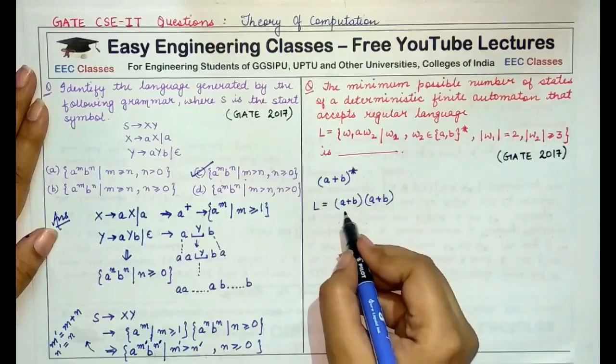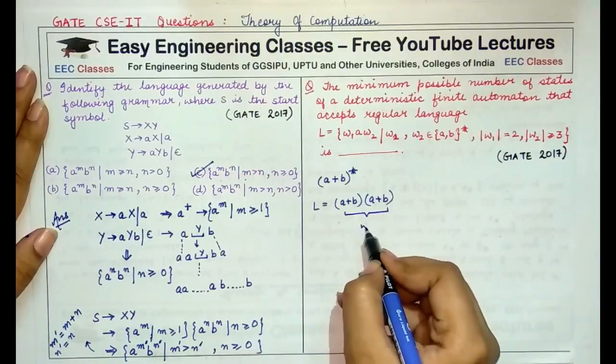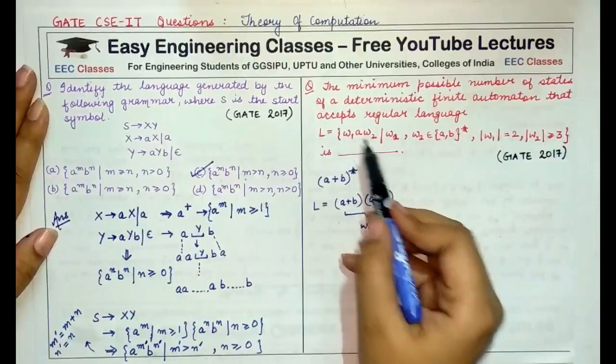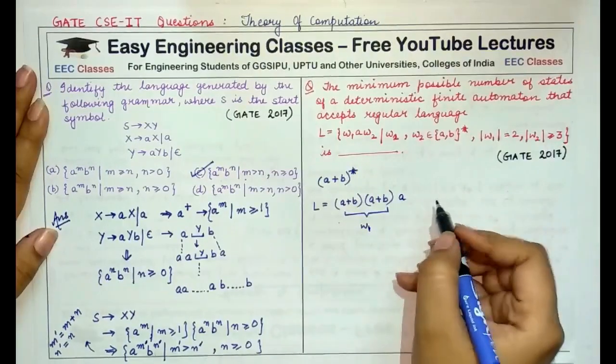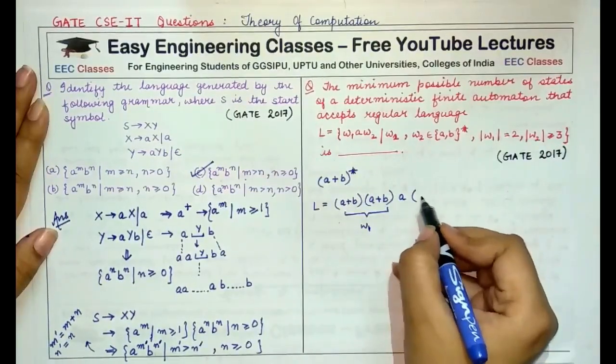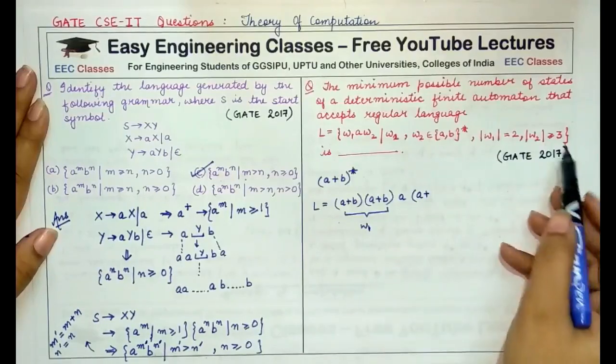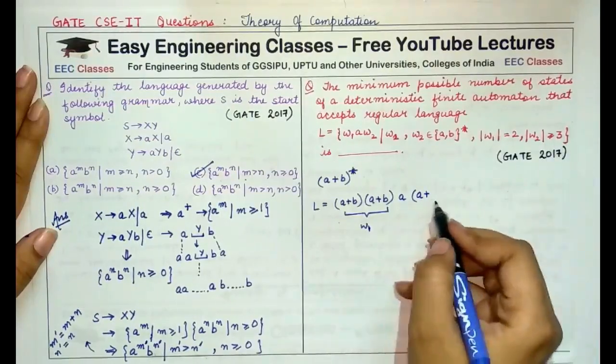So, the length of W1, this is representing W1, would be 2. Then W1 is followed by an A in the language, then W2 and the length of W2 is 3, at least 3.